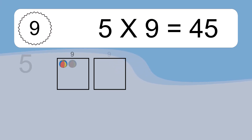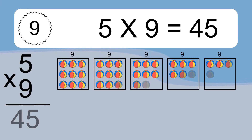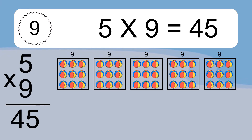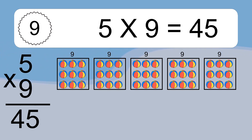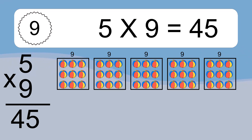5 times 9 equals what? 5 times 9 equals 45. If you count all the balls in all the boxes together, you will have 5 times 9 balls. This equals 45 balls.